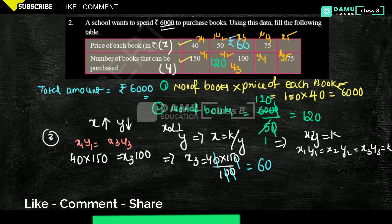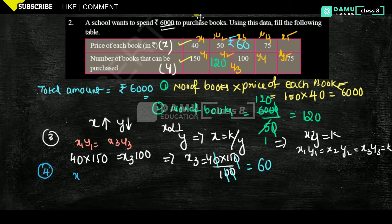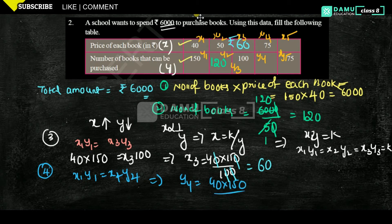Then for the fourth one: x1·y1 = x4·y4. We have to find y4: y4 equals 40 into 150 divided by 75, which is 6,000 by 75.